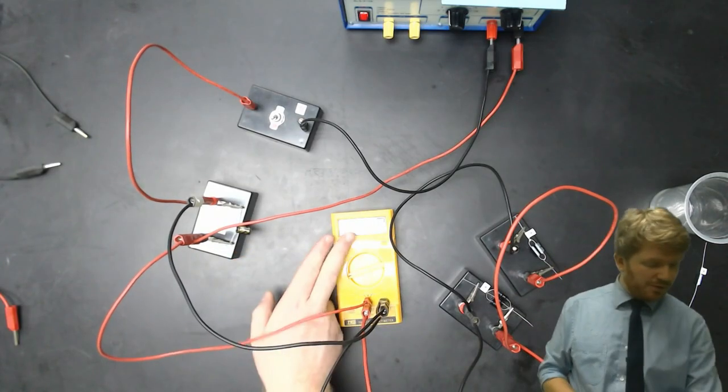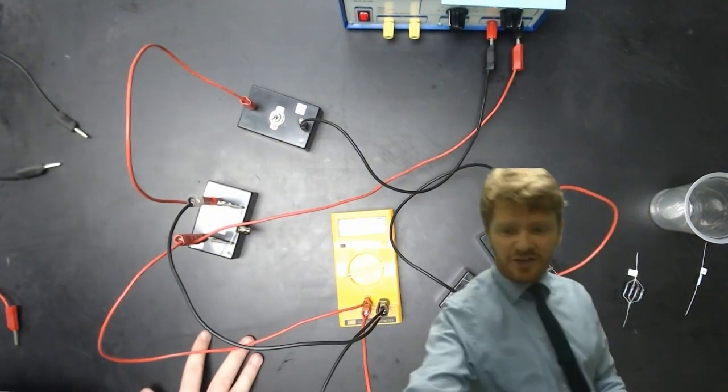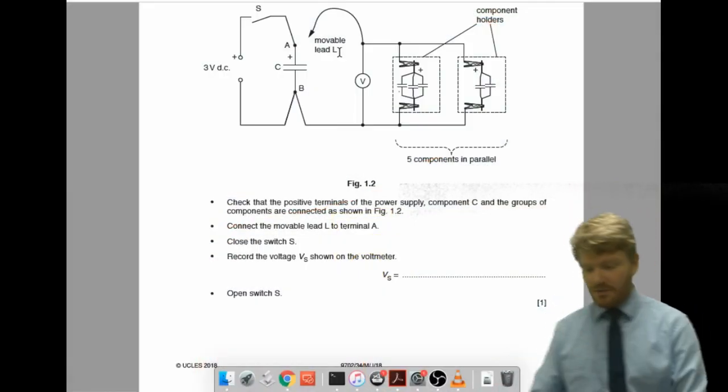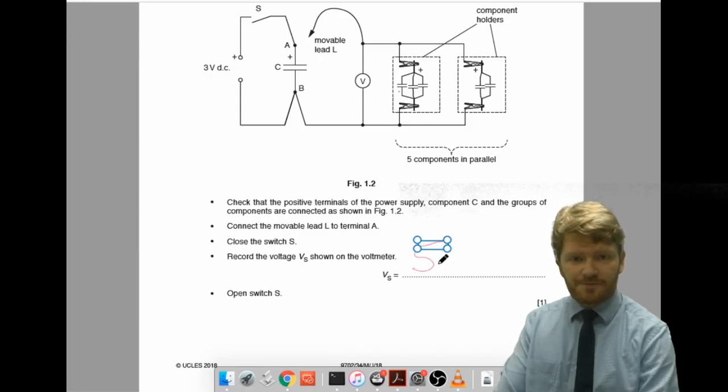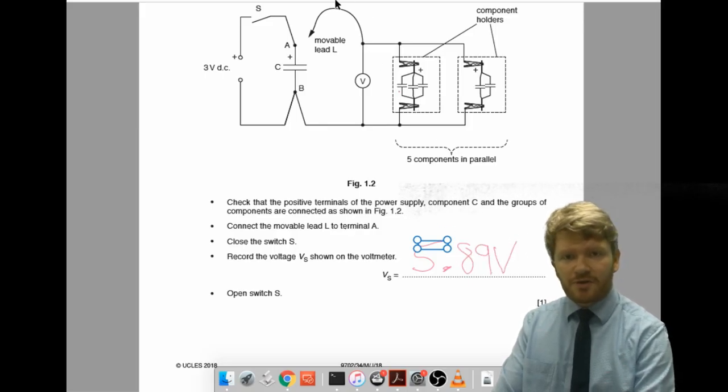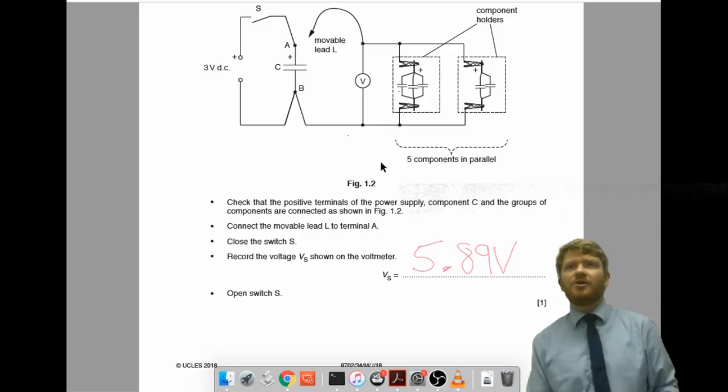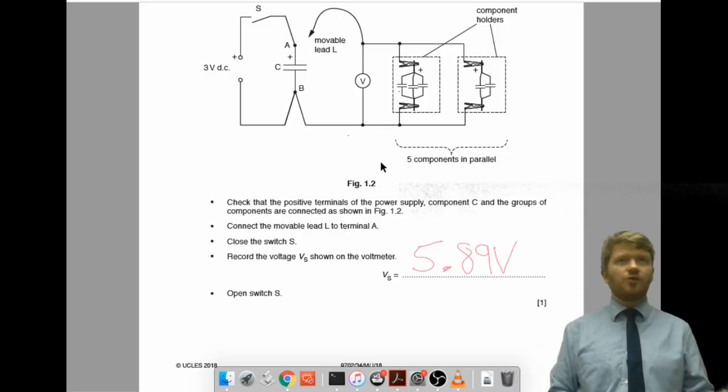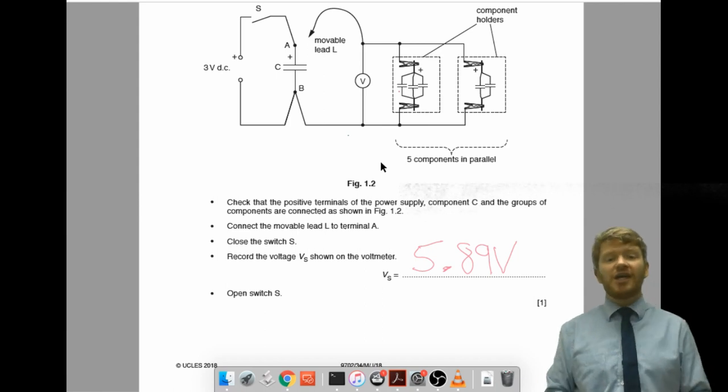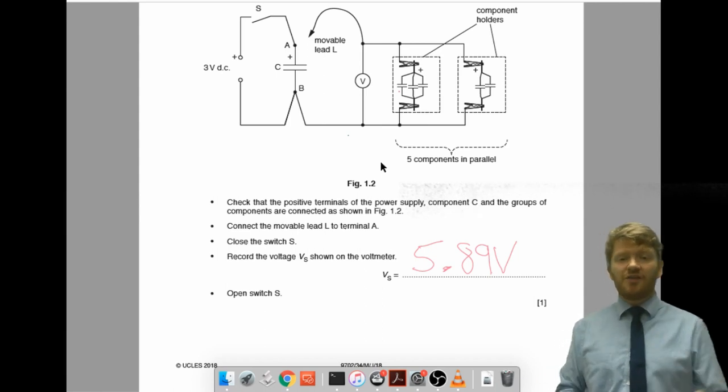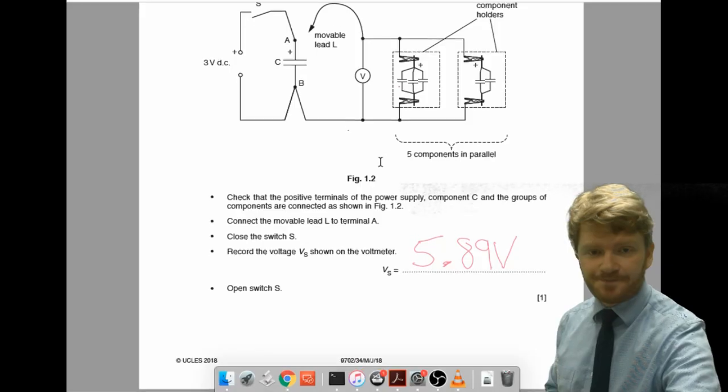Okay, so my voltmeter is reading 5.89. So, in my test, I'm just going to write directly in the script that number, 5.89. And it's always important to include the unit. And just remember that whenever you do this, you need the same number of significant figures as your device. So, this is recording to 3 sig figs. You should record to 3 sig figs. If I later do any calculations on that, that should be to the same number.